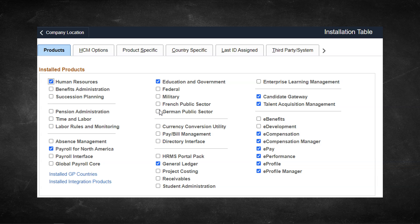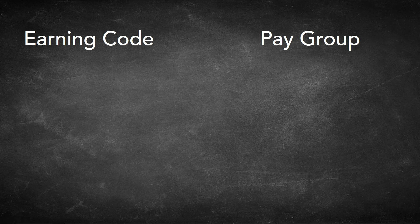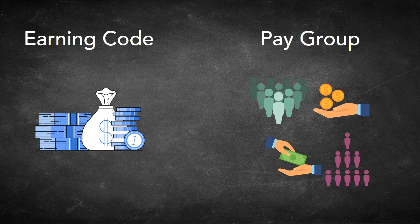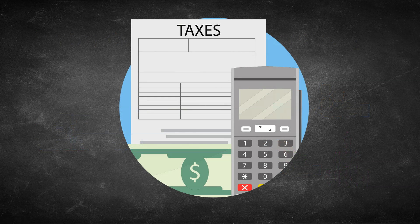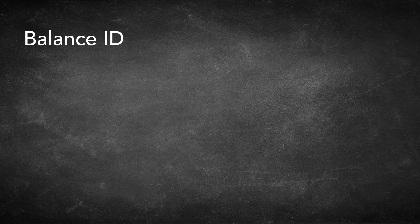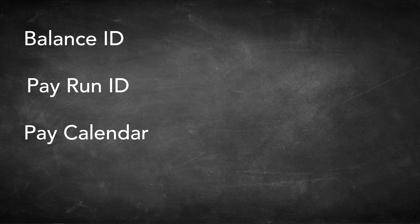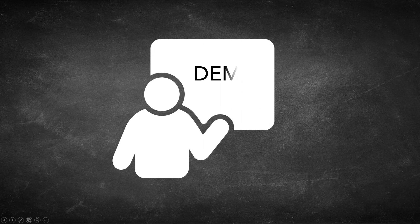In case you missed it, I will drop the link to my previous video in the description below. In this episode, we will kick off payroll setup — creating an earning code and pay group. After that, we will go through important configuration pages that PeopleSoft uses to calculate payroll taxes. Then we will set the stage to run payroll processes by creating a balance ID, pay run ID, and pay calendar. We will go through each concept in easy-to-understand language. By the end of this episode, we will have everything in place to run the first payroll for our company.